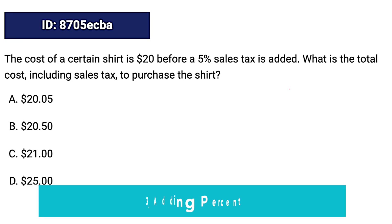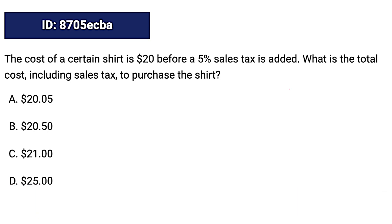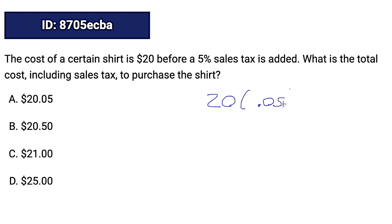Concept number three is how to add percent. Adding percent is very similar to finding a percent of, because if we want a percent of something, we just multiply by that percent. The only difference is if we are adding percent, we are going to add 100% to whatever we're trying to add. Here it says the cost of a shirt is $20 before a 5% sales tax is added. A tax makes the number bigger, so this is adding 5% to 20. We want to multiply by 105%, or 1.05.